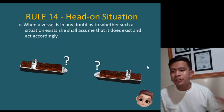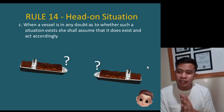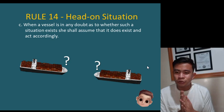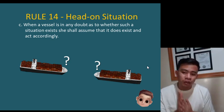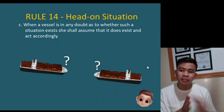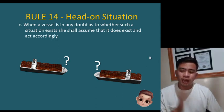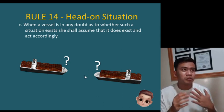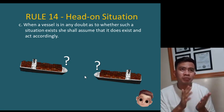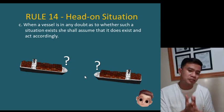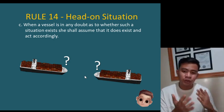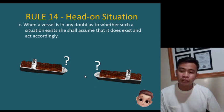According to Rule 14 paragraph C, when a vessel is in any doubt as to whether such a situation exists, she shall assume that it does exist and act accordingly. So if you are in doubt whether there is a head-on situation, you need to assume that there is one and take action. This prevents collision — as early as possible, if in doubt, assume head-on and take action as a proper lookout and officer on board.